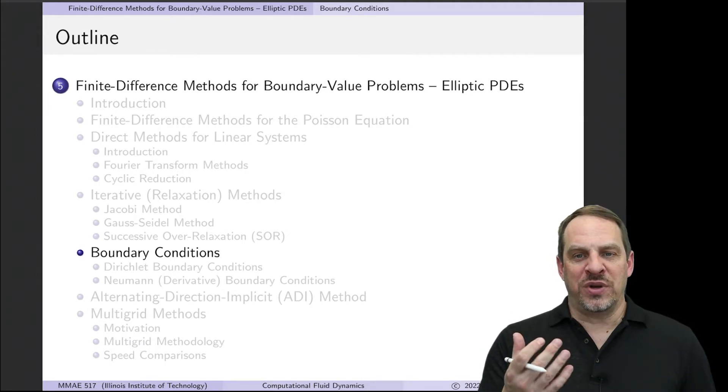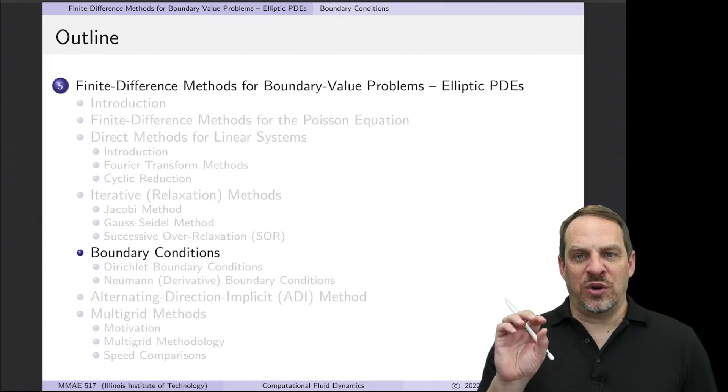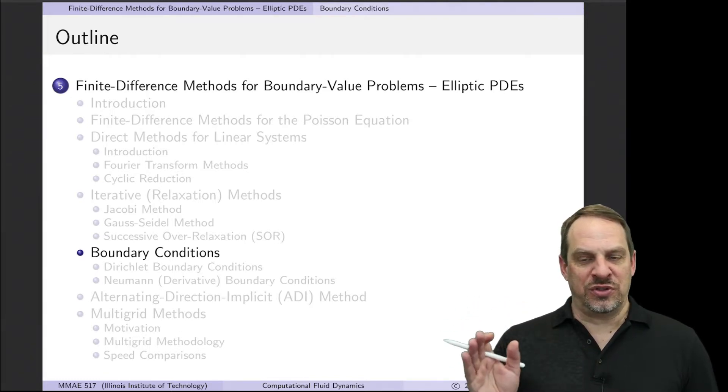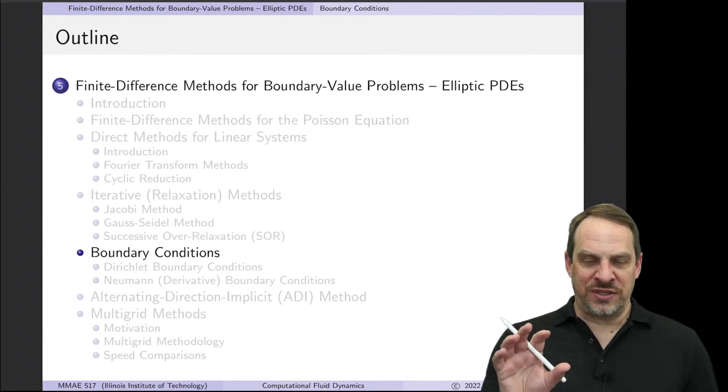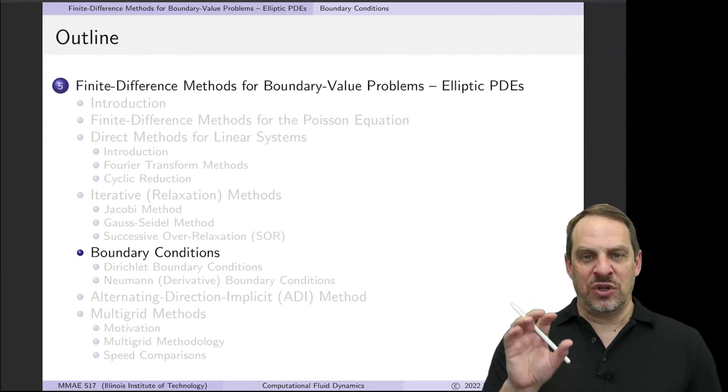So if you haven't already, go back and look at the extended fin example where we had a one-dimensional boundary value problem. We had boundary conditions—Dirichlet, Neumann, Robin, and so forth—and we discussed in the one-dimensional context how those boundary conditions would be implemented.